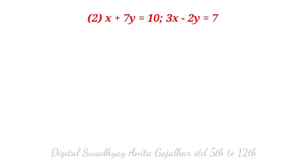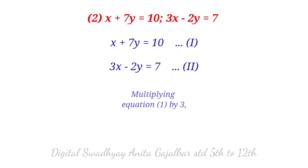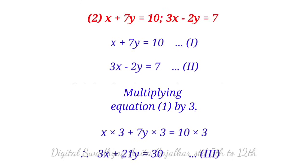Next problem: x plus 7y equal to 10 (equation first), 3x minus 2y equal to 7 (equation second). In equation first the coefficient of x is 1 and in the second it is 3. To make coefficients equal, we multiply equation first by 3: 3x plus 21y equal to 30 (equation 3).